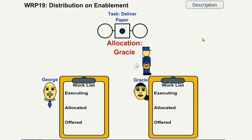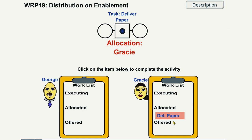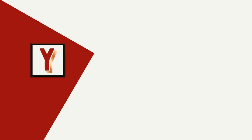The delivery round work item is allocated to a paperboy at the time it is required to commence. Hi, my name is Andreas Hense and this video is part of a series on resource patterns in YAWL. Today we talk about distribution on enablement.